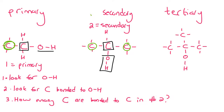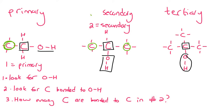And let's try the last one. We look for the OH — there it is. Look for the carbon that is bonded to it, and then look for the carbons bonded to that one. So there's one, two, three. And so that is called a tertiary alcohol, because there are three carbons bonded to that carbon.